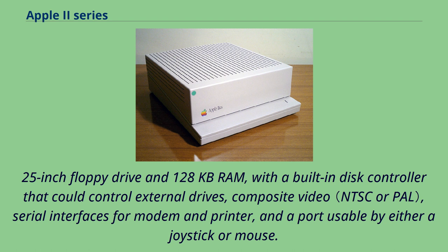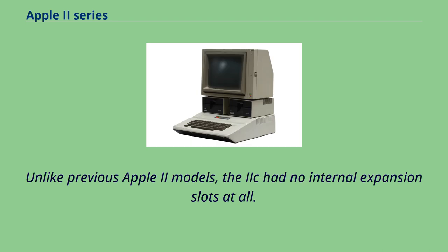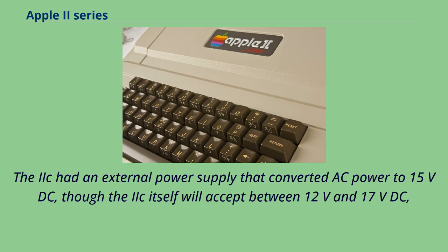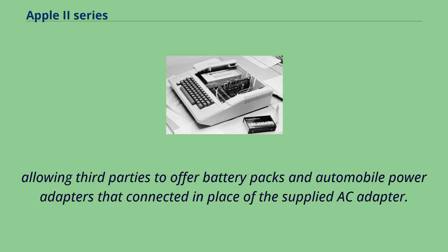Unlike previous Apple II models, the IIc had no internal expansion slots at all. Two different monochrome LCD displays were sold for use with the IIc's video expansion port, though both were short-lived due to high cost and poor legibility. The IIc had an external power supply that converted AC power to 15V DC, allowing third parties to offer battery packs and automobile power adapters.